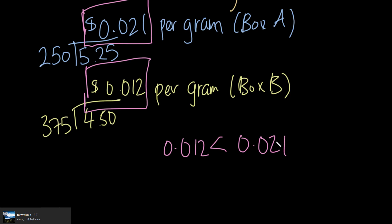It's asking how much cheaper per gram, so we simply have to subtract these two numbers to find the difference. So 0.021 minus 0.012, that's going to give us 0.009 per gram, which means our answer is B.